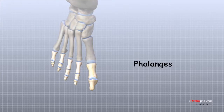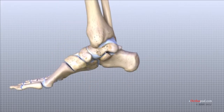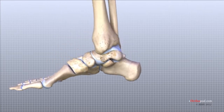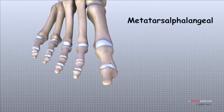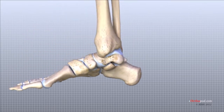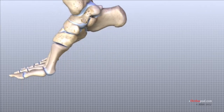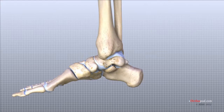Finally, there are the bones of the toes, the phalanges. The great toe, like the thumb, has only two phalanges, while each of the other four toes has three phalanges. The joints between each phalanx are called the interphalangeal, or IP, joints, and there is not a great deal of motion in the IP joints. The joint between the metatarsal and the first phalanx is called the metatarsophalangeal, or MTP, joint. Together, all of the MTP joints form the ball of the foot, and movement in these joints is very important for a normal walking pattern. The big toe, or hallux, is the most important toe for walking, and the first MTP joint is a common area for problems in the foot.